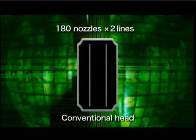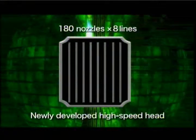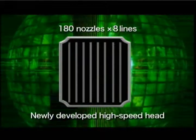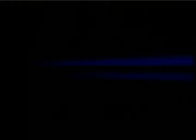In the conventional system, two lines with 180 nozzles each were mounted on one head. The new high speed head has eight lines with 180 nozzles each, four times as many as before. That's the secret of the super high speed.